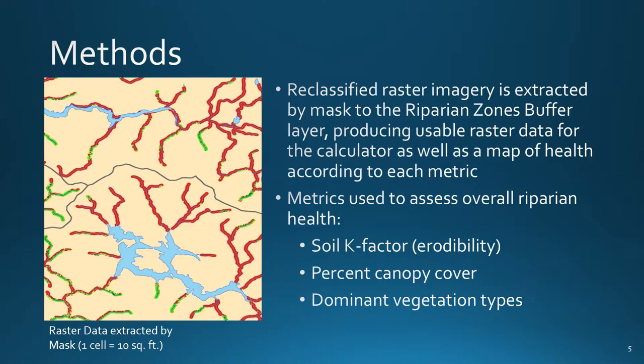We considered low K-factor, high canopy cover, and vegetation dominated by trees or shrubs to be indicators of good overall riparian health and assigned to them low raster values. Higher erodibility, sparser cover, diminished tree and shrub strata vegetation, and presence of agriculture or permanent human development were considered indicators of greater riparian fragility and assigned high raster values. Raster data for canopy cover and vegetation type were made readily available from landfire.gov. Soil data was downloaded from the USGS web soil survey. K-factors were assigned to soils in a table joined to the shapefile, and the shapefile was converted to a raster dataset for further use. This was done for each of five specific intervals between 2001 and 2014 for which data was available.